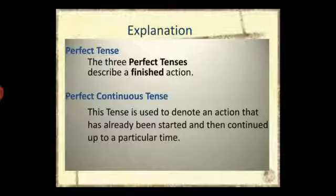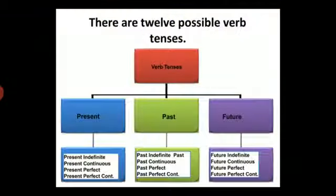So, 3 times 4 gives us a total of 12 possible verb tenses: present, past, and future indefinite or simple; present, past, or future continuous; present, past, and future perfect; and present, past, and future perfect continuous.